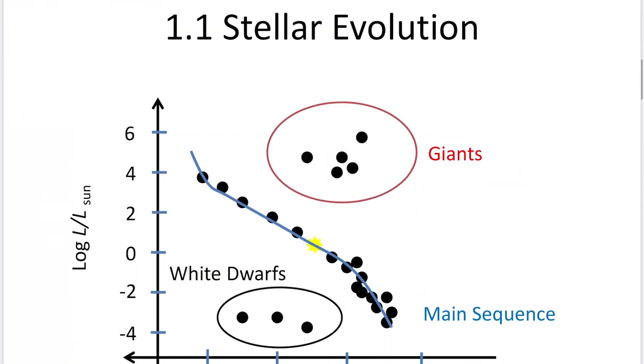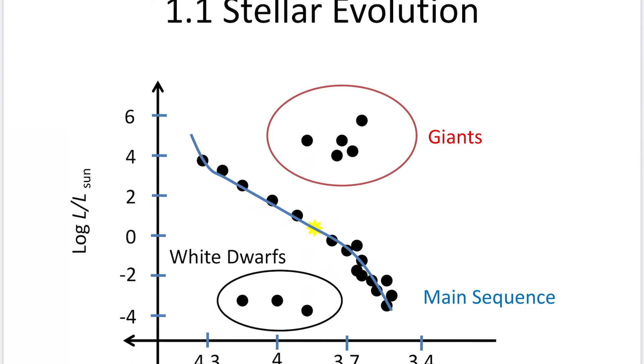First topic is stellar evolution. In the previous lectures, we studied the HR diagram. In the HR diagram, the vertical line is the luminosity, logarithmic scale. The horizontal line is the temperature, surface temperature of stars.